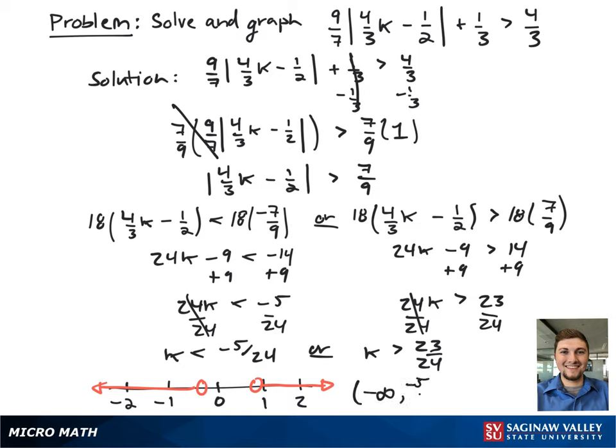In interval notation, this looks like an open bracket from negative infinity to negative 5 over 24, and union with an open bracket from 23 over 24 to infinity. And that's our final answer.